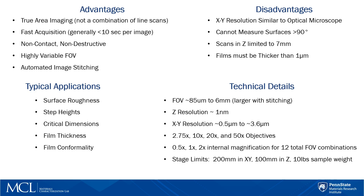If there is a film present on the sample surface, it must be thicker than 1 micron in order to resolve the interference packets reflecting from the film and surface respectively. Typical applications include measuring surface roughness, step heights, and critical dimension analysis. We are also able to measure film thickness and conformality.